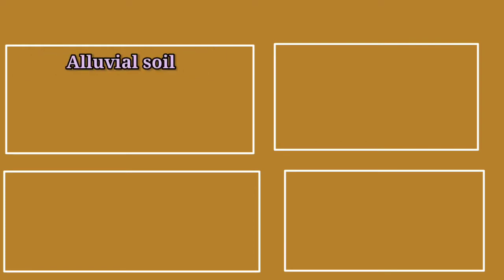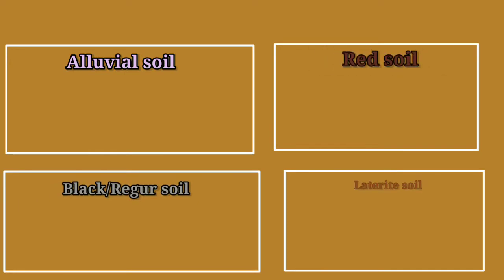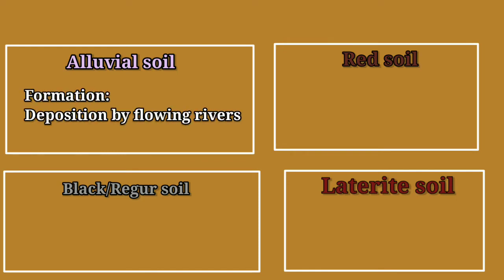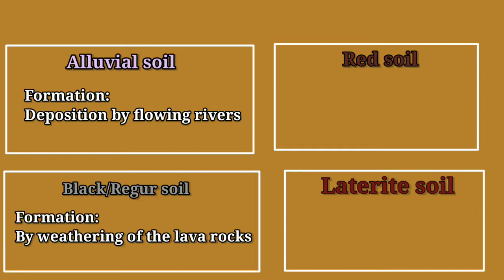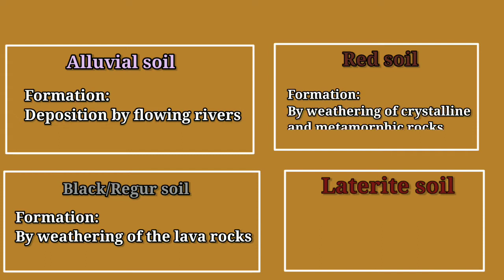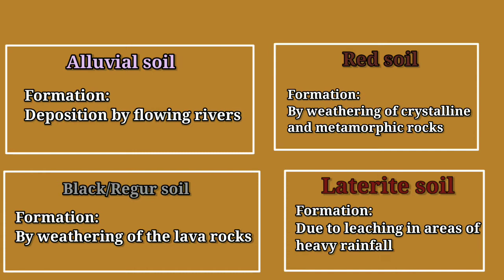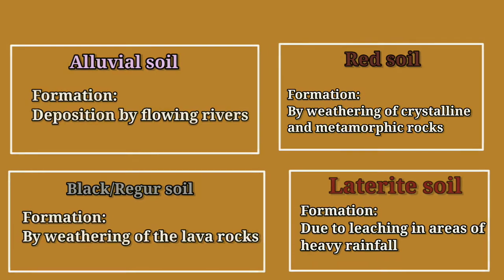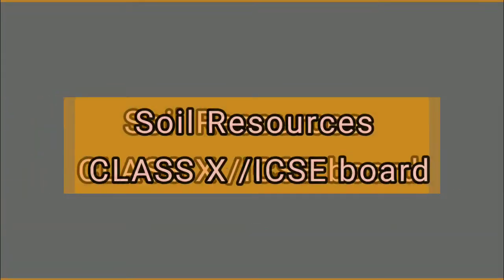Let us have a look at different soils and their formation. Alluvial soil is formed by deposition by flowing rivers. Black soil is formed by weathering of lava rocks. Red soil is formed by weathering of crystalline and metamorphic rocks. Laterite soil is formed due to leaching in areas of heavy rainfall.